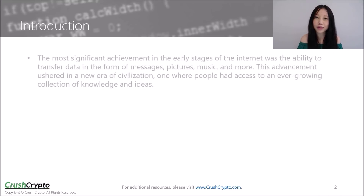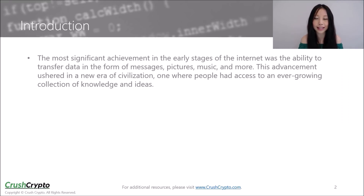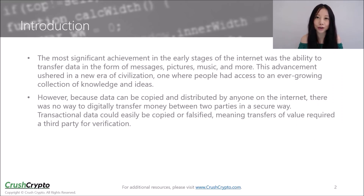This is part of our new educational series where we will be exploring different areas of blockchain technology. The most significant achievement in the early stages of the internet was the ability to transfer data in the form of messages, pictures, music, and so on. This brought in a new era of civilization, one where people had access to an ever-growing collection of knowledge and ideas. However, because data can be copied and distributed by anyone on the internet, there was no way to digitally transfer money between two parties in a secure manner.